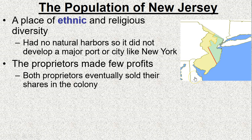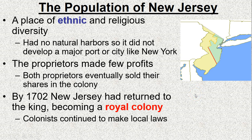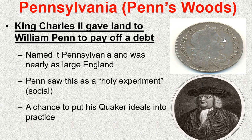Eventually the proprietors of New Jersey sold their shares and it became a royal colony, meaning the king had more direct control. However, ruling from so far away, the king couldn't really control things very directly — it was expensive to pay people to enforce control — so the colonies still had a lot of autonomy and independence.